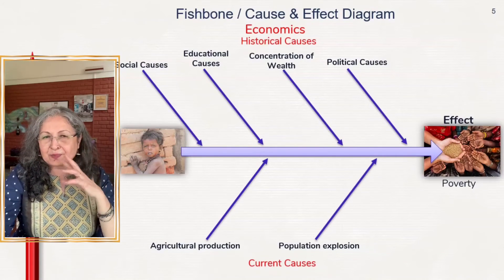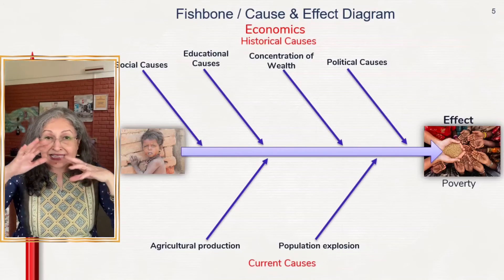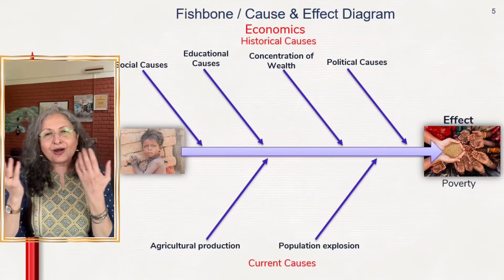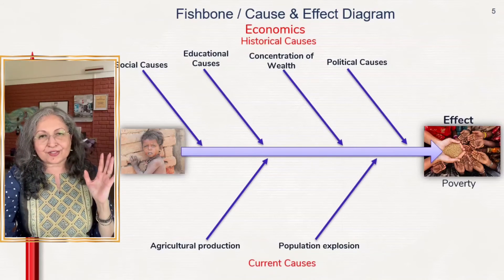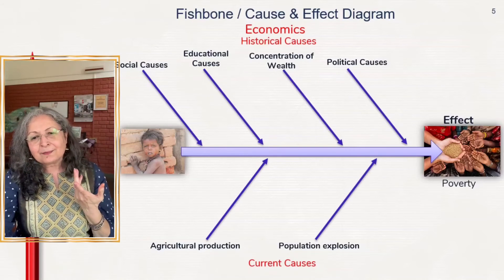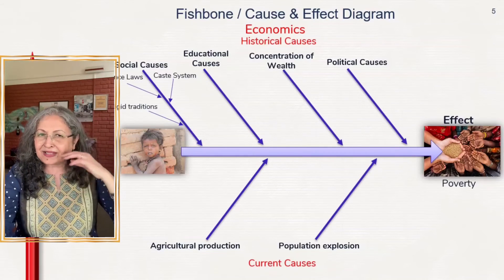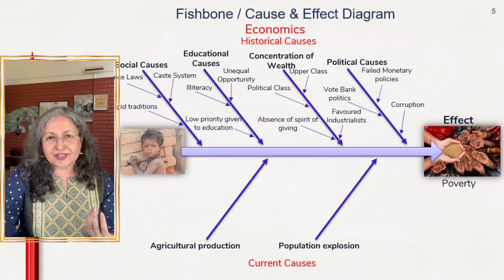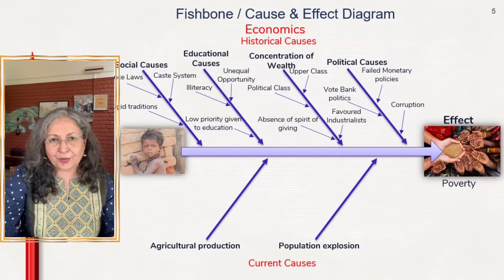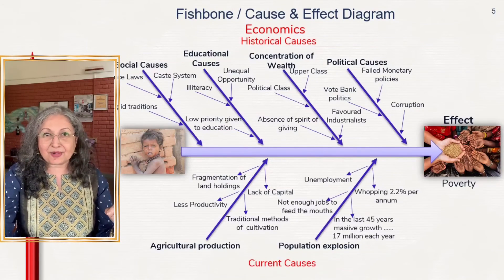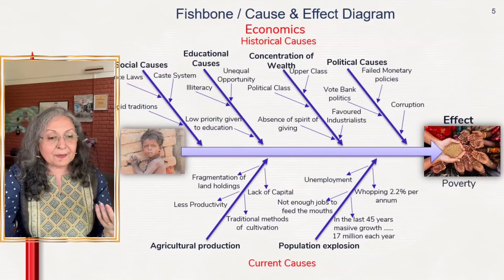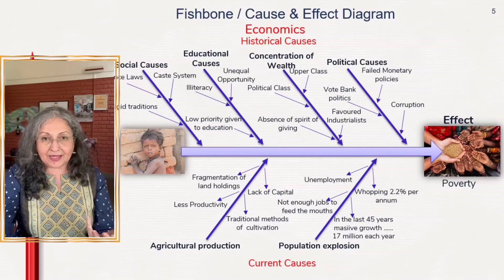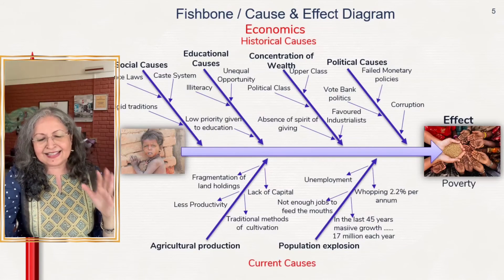There is also the concentration of wealth in a few hands — the Pareto principle, the 80-20 rule: 80% of the world's wealth is held by 20% of people, which obviously leads to poverty. Political causes include corruption and vote-bank politics, where many people are kept poor and illiterate for votes. On the current causes side, agricultural production issues — farmers losing their farms, lack of capital, reliance on traditional methods.